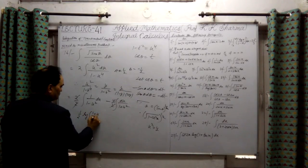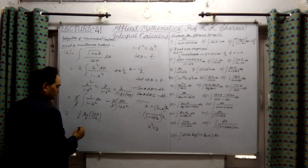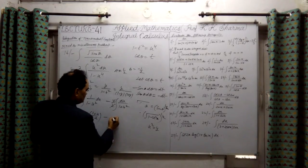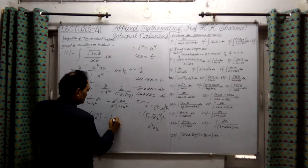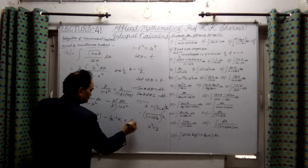1 plus u, 1 minus u. Minus sign difference, 1 upon a means nothing. Tan inverse u equals u plus constant of integration, and it is absolutely perfect.